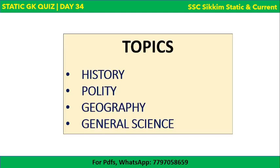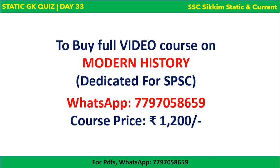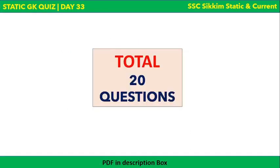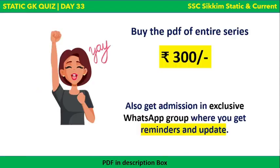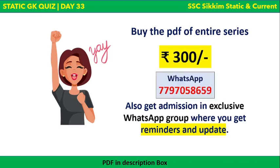To buy a full video course on Modern History, Geography, Polity and various other subjects, each at 1200 rupees per course, you can send a message to this WhatsApp number. There are a total of 20 questions in today's session. The PDF of the entire series will cost you 300 rupees — send a message to this WhatsApp number.